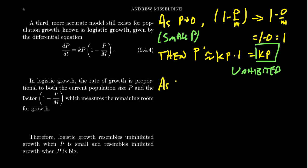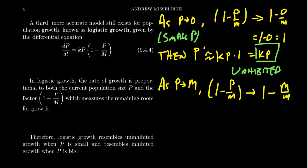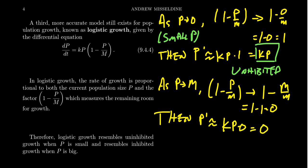On the other hand, as the population gets closer to the maximum population, we see that one minus p over m converges towards one minus m over m, which is one minus one, which is zero. So p prime will be approximately kp times zero, that is zero. When p gets closer to m, it looks like there's no growth whatsoever — this is now inhibited growth.